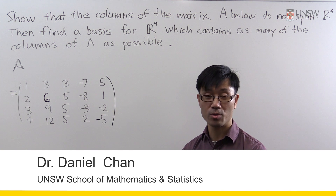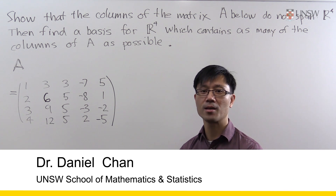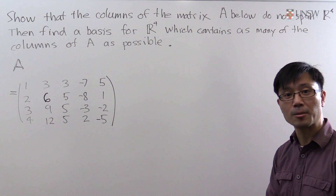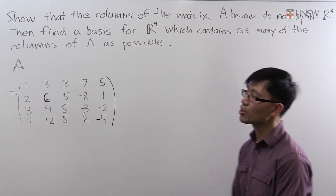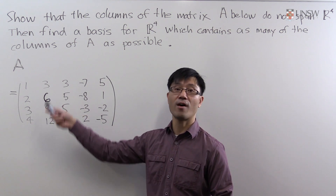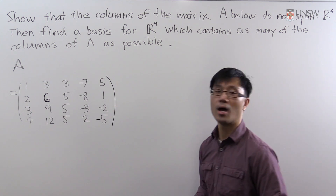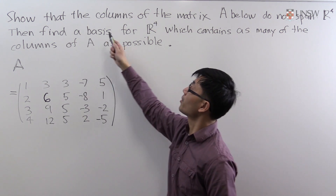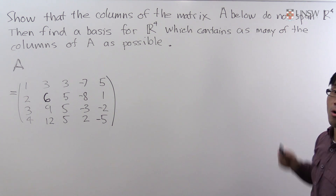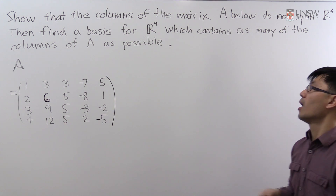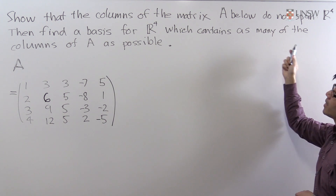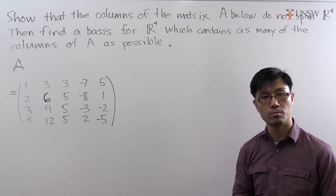Hi, I'm Daniel Chan from UNSW Australia. In this video we'll be looking at some linear algebra and the question of finding bases. The question we'll look at today involves a 4 by 5 matrix A, and it asks us to show that the columns of the matrix A do not span R4, and then to find a basis for R4 which contains as many of the columns of A as possible.